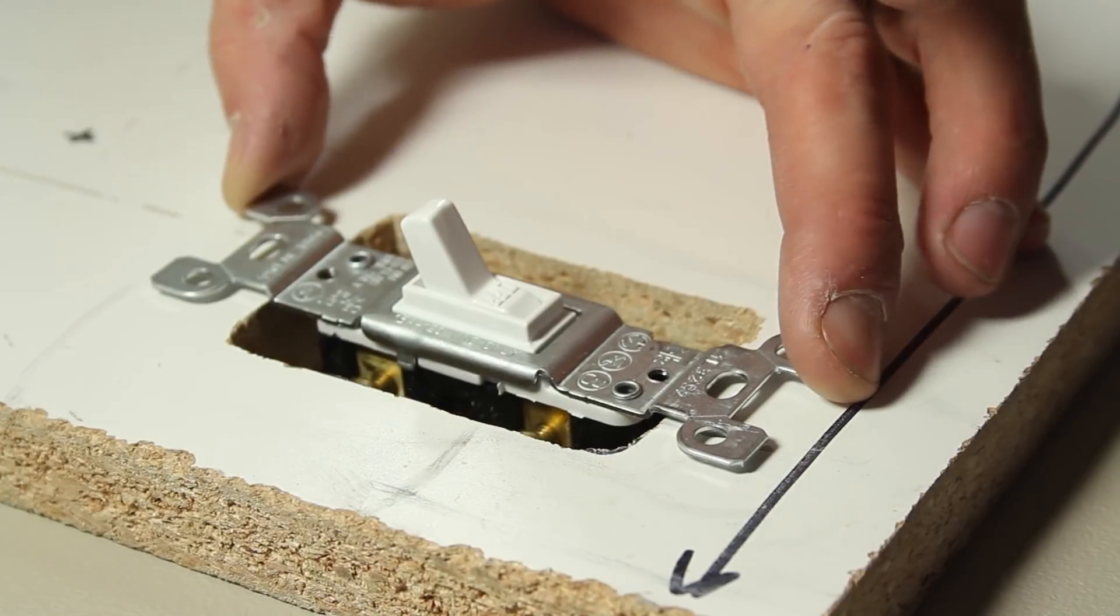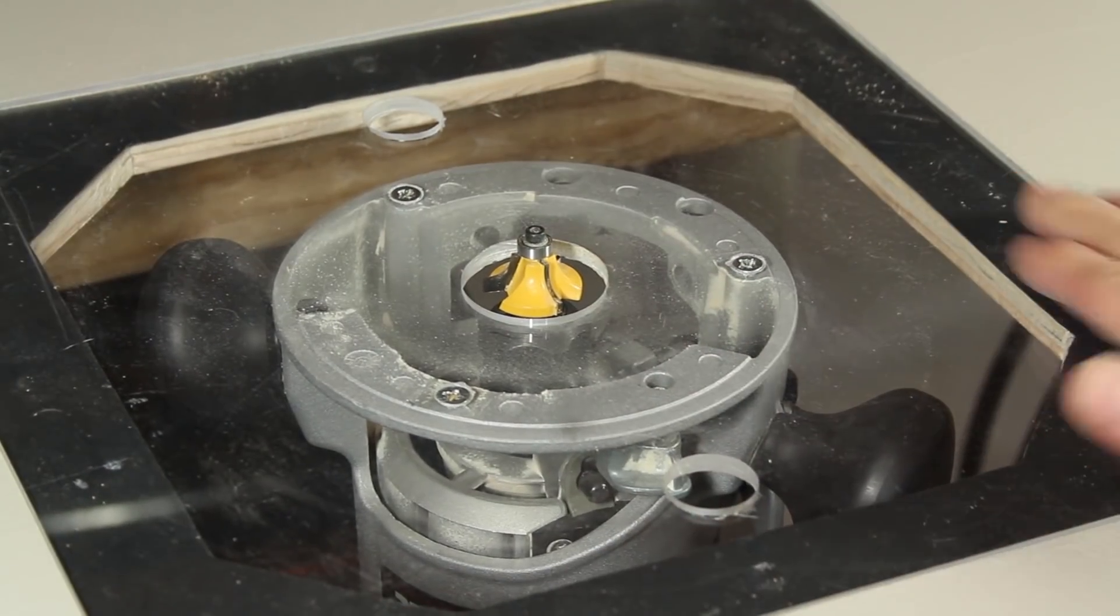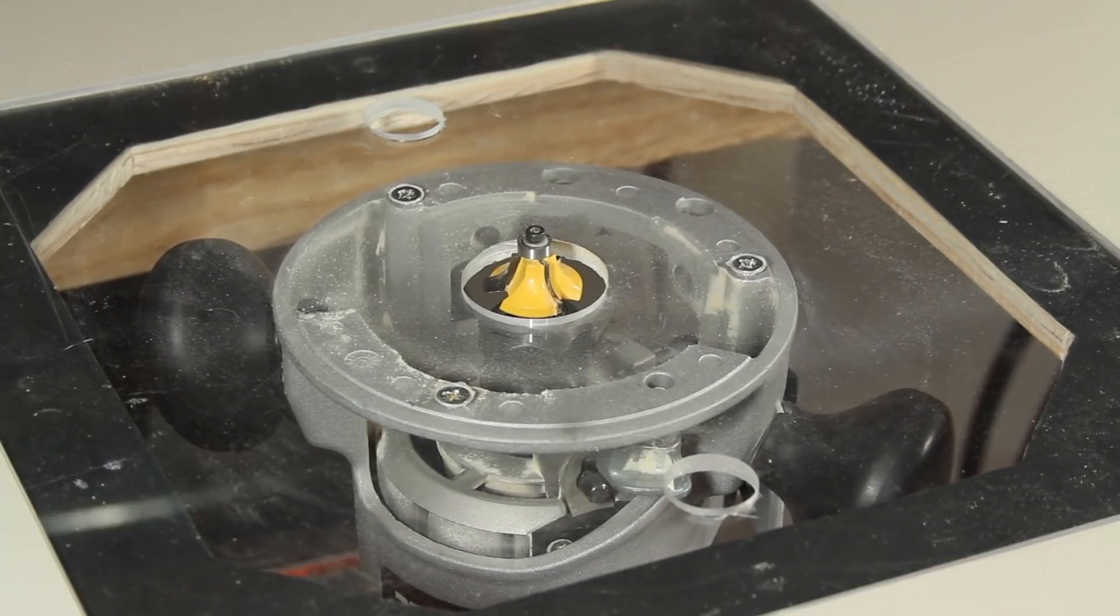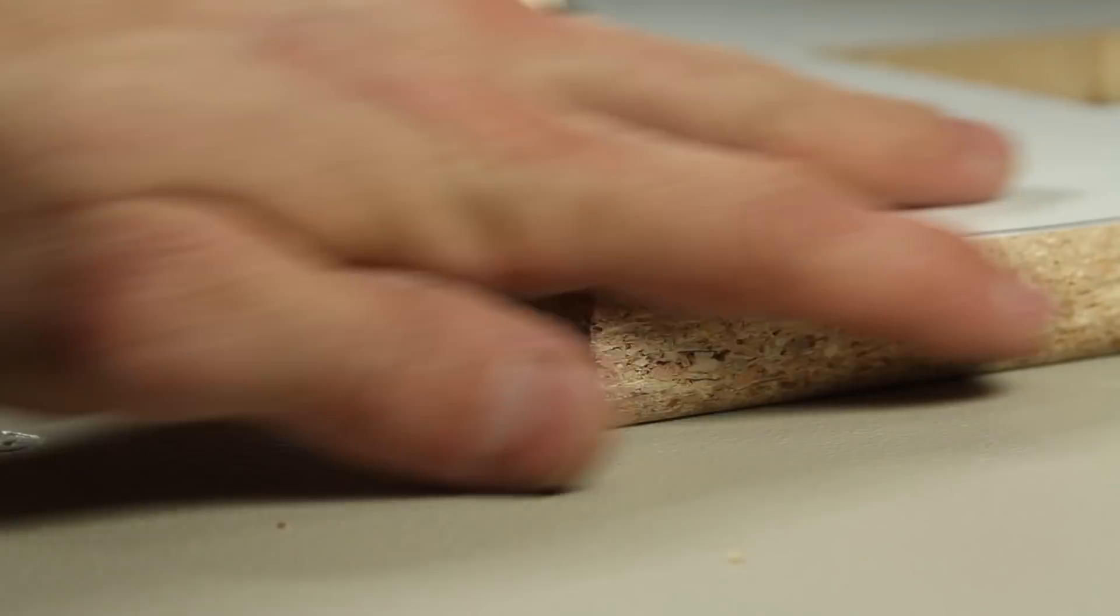We can use the light switch as a template for marking where the two holes will need to be drilled. This part is optional, but let's go ahead and finish the edges with a half inch rounding bit on the router table. By profiling the tops and bottoms of all the edges, we're left with a nice smooth finish.